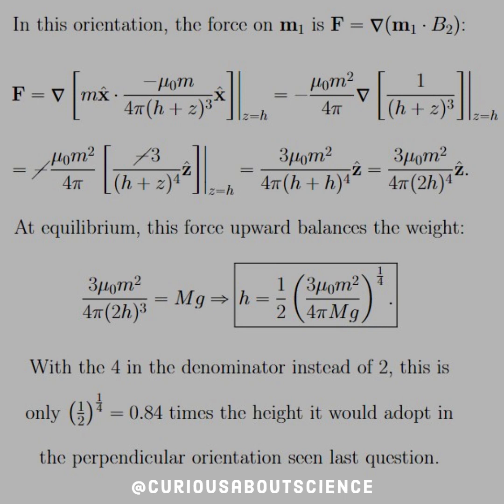But if we contrast this with the last question, we see that we have a 4 in the denominator instead of a 2. That's a factor of (1/2)^(1/4), which numerically is represented by 0.84. This is 0.84 times the height it would adopt in a perpendicular orientation seen in the last question. So we suffer a little bit of height, but we get more stability. That's the trade-off.